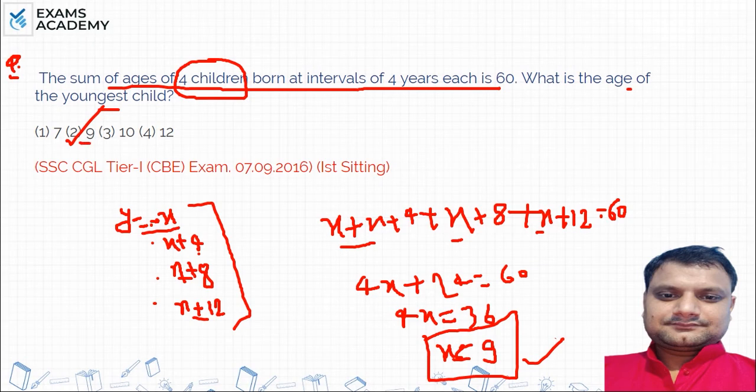Every 4 years at the interval is charged. When you first get x, then x plus 4, x plus 8, x plus 12. When you solve it, you have to take the total sum of 60. When you solve it, you will get 9 as your answer.